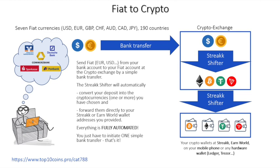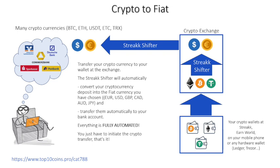Of course, you can change the destination addresses and the currencies at any time in the administration interface and use the fiat shifter for any project you like. The other way round works just as easily and quickly. Send a cryptocurrency to your exchange account and the Streak Shifter will automatically exchange it into dollars or euros and transfer it back to your bank account. The Streak Shifter currently supports several cryptocurrencies like USDT, Bitcoin, Ether, Ether Classic, and Tron.